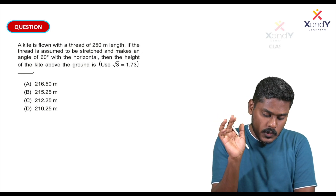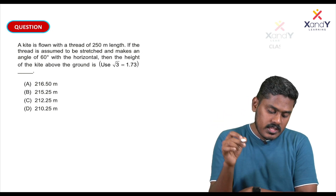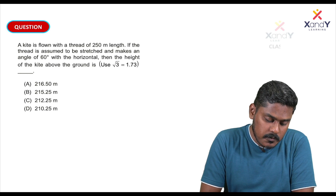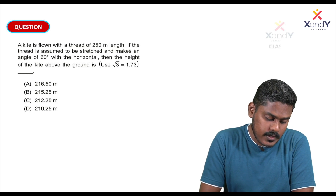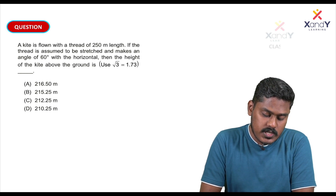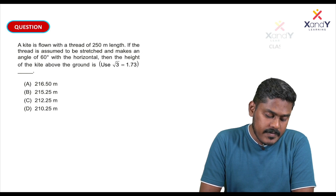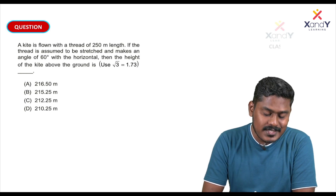Now, the next question is: a kite is flown with a thread of 250 meter length. If the thread is assumed to be stretched and makes an angle of 60 degrees with the horizontal, then the height of the kite above the ground is?